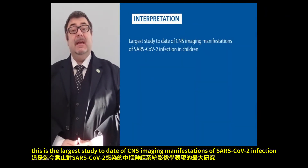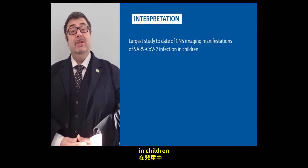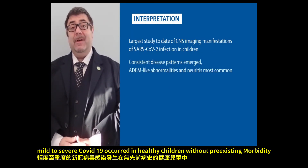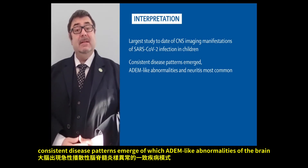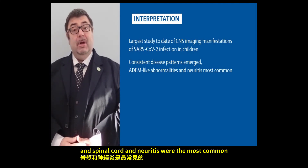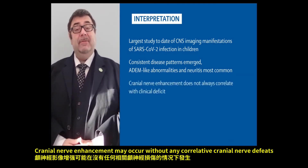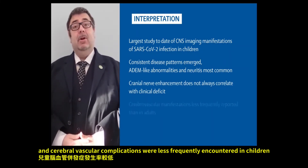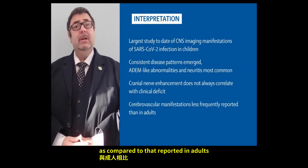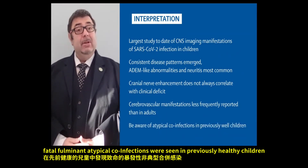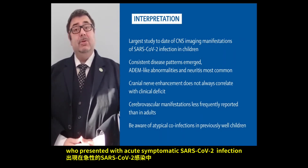This is the largest study to date of CNS imaging manifestations of SARS-CoV-2 infection in children. Mild to severe COVID-19 occurred in healthy children without pre-existing morbidities. Consistent disease patterns emerged, of which ADEM-like abnormalities of the brain and spinal cord and neuritis were the most common. Cranial nerve enhancement may occur without any correlative cranial nerve deficits, and cerebrovascular complications were less frequently encountered in children compared to adults. Sadly, fatal fulminant atypical co-infections were seen in previously healthy children who presented with acute symptomatic SARS-CoV-2 infection.